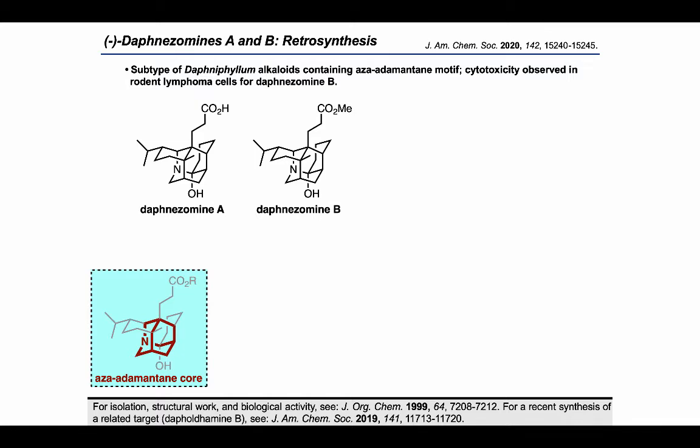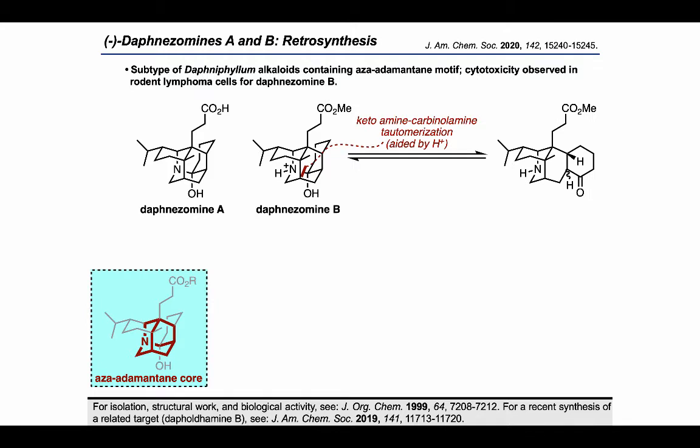Thinking about how to approach these targets retrosynthetically, the authors recognized that the targets contain a carbonyl amine, which can be thought of as a tautomer of a ketoamine. They proposed that it might be possible to simplify retrosynthetically by taking advantage of this tautomerization, which conversely might be leveraged in the synthetic direction by using an acid to lock the target as the carbonyl amine.